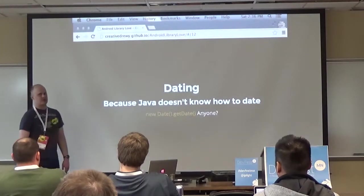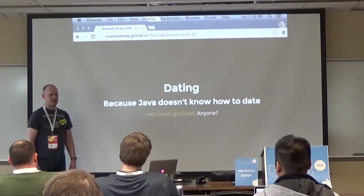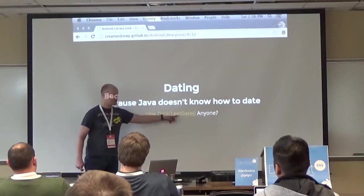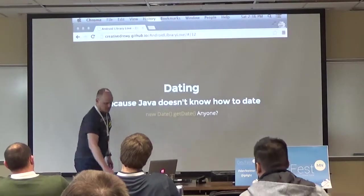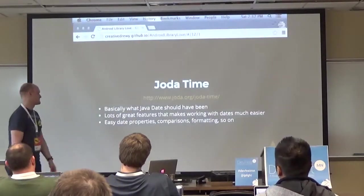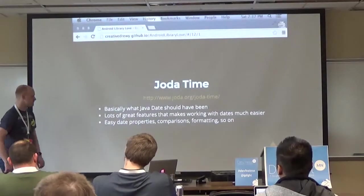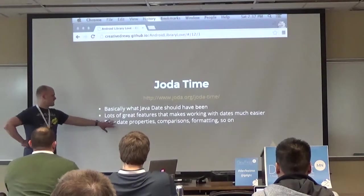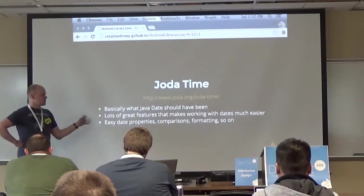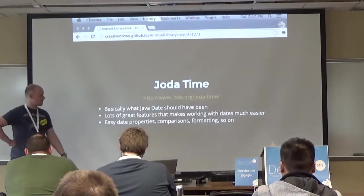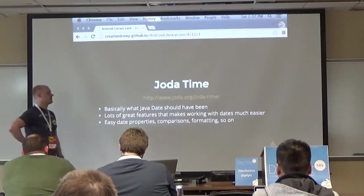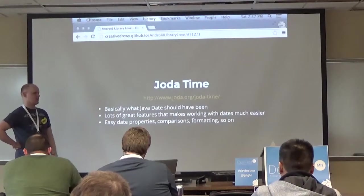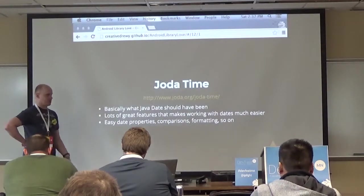Dates - because Java doesn't know how to handle dates. Has anybody worked with date objects in Java? It's like a nightmare. Joda Time is the big library - it's basically what Java dates should have been. It has tons of great features: easy date properties like getYear and getMonth, easy date comparisons, and great formatting options.